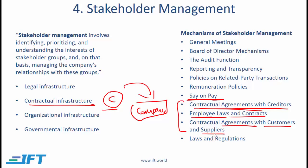Laws and regulations connect with the governmental and legal infrastructure discussed earlier. Companies must follow laws and regulations established by government and regulatory authorities, which are generally intended to protect specific groups such as customers or the environment. For certain industries — such as banks, food manufacturers, healthcare companies, and airlines — these laws and regulations can be quite strict.